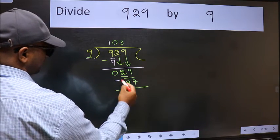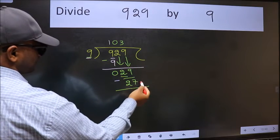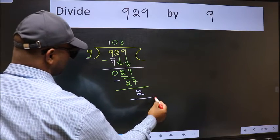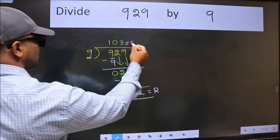Now we should subtract and we get 2. No more numbers to bring down, so we stop here. This is our remainder and this is our quotient.